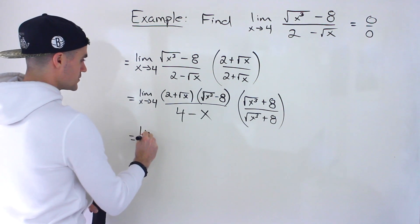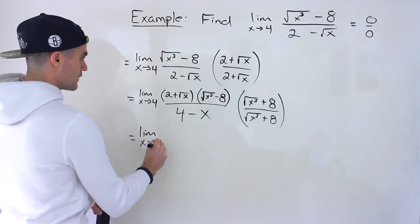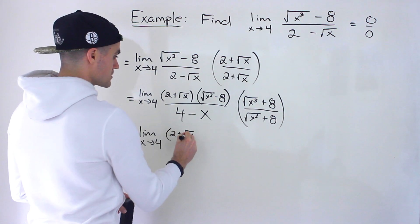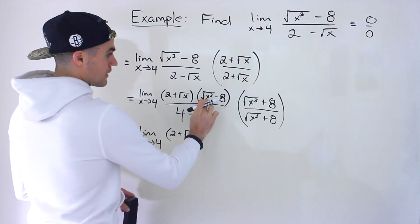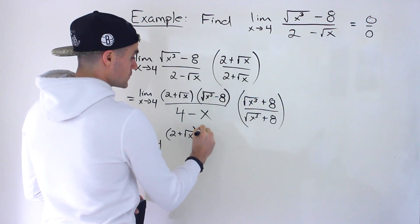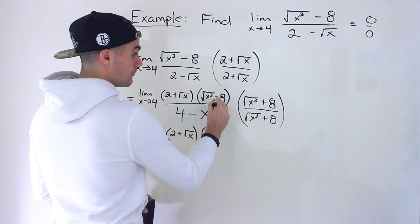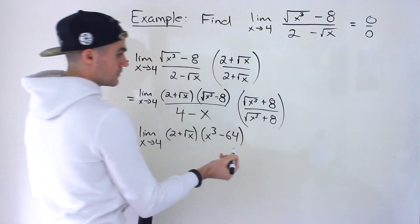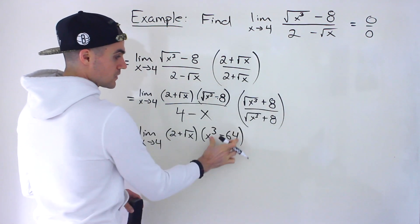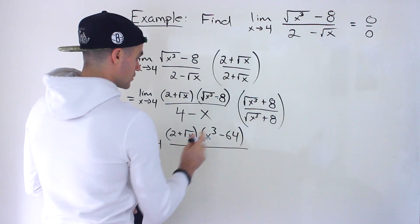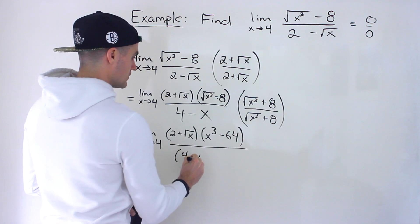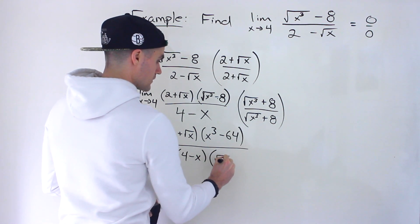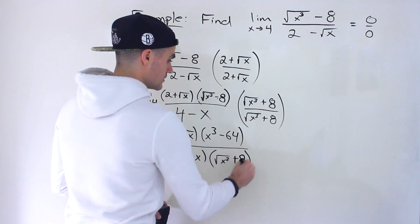We multiply the denominator by the same thing, so be careful — there are lots of factors. We still have the (2 plus root x) factor. Then root x to the power of 3 times root x to the power of 3 is just x to the power of 3, minus 8 times positive 8 gives us negative 64 — a difference of squares. So the denominator has (x³ minus 64), and we also have the factor (square root of x to the power of 3 plus 8).